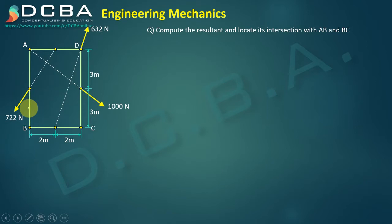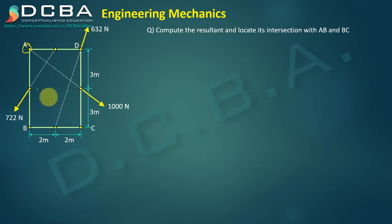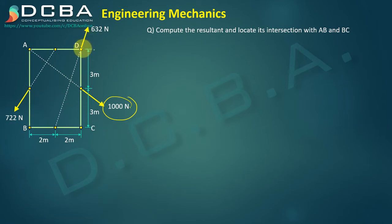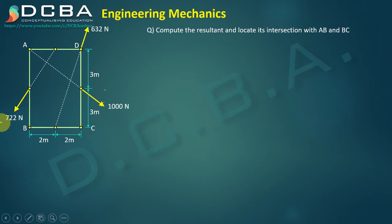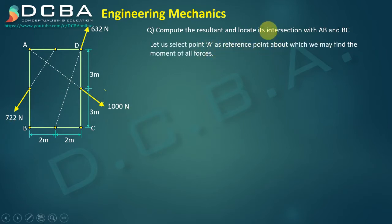As shown in my previous video lecture, a non-concurrent force system can be converted to a concurrent force system by transferring forces to a point. The point I have selected is point A — you are free to choose any other convenient point. I selected point A because the 1000 N force's line of action passes through it, so it contributes zero moment. Similarly, the x-component of 632 N and the 722 N component also pass through point A, making their moments zero. So point A is our reference point for finding moments.